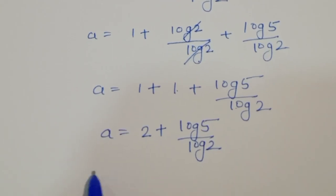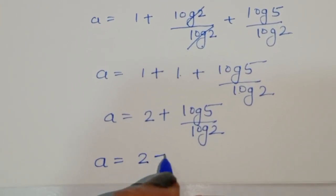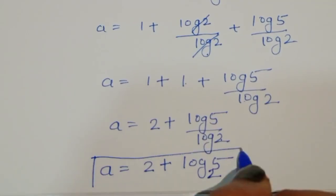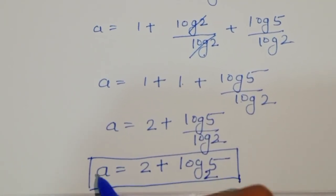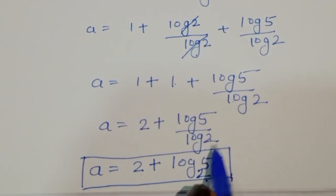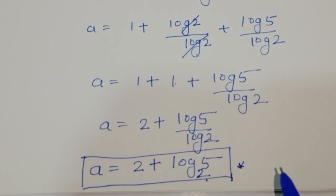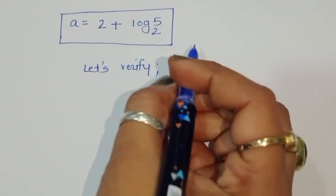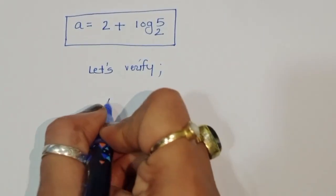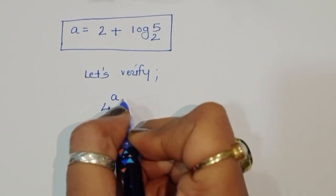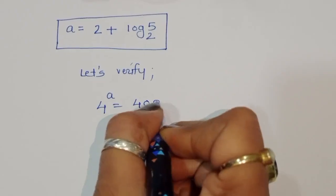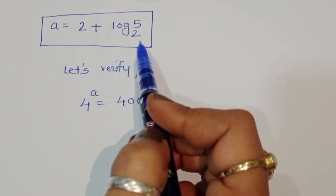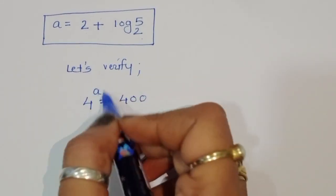So a equals 2 plus log of 5 to the base 2. This is the solution for this equation. Now let's verify whether this is correct. The original question is 4 power a equals 400, and we got the value of a as 2 plus log of 5 to the base 2. We will check by substituting this value.